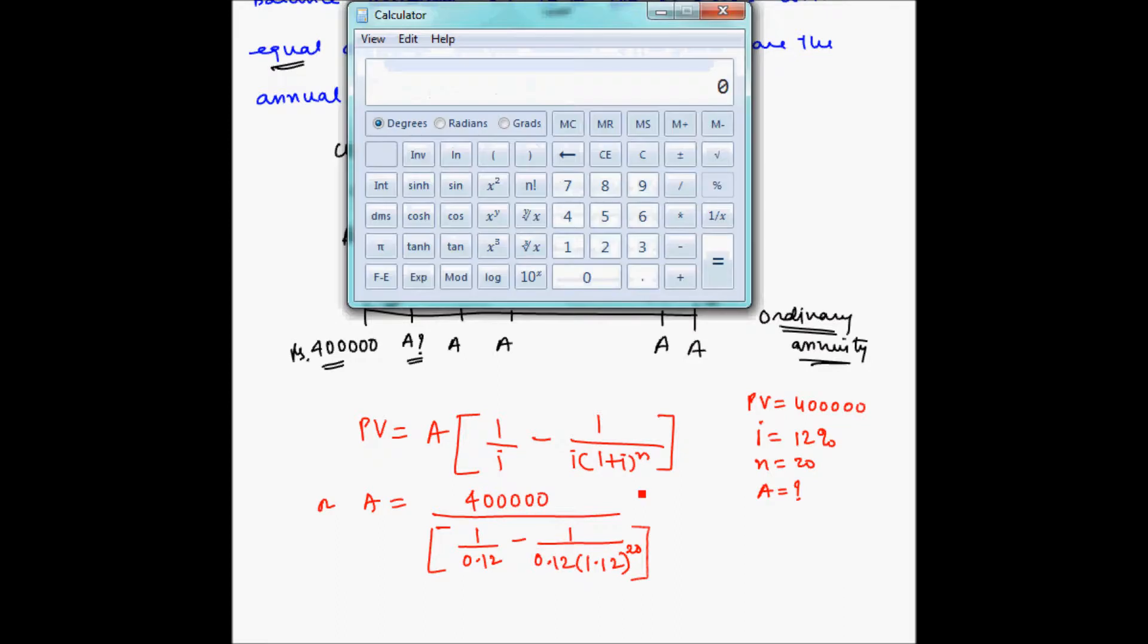Let us solve this using a scientific calculator. So let us first solve this portion here: 1.12 x to the power y 20 × 0.12 =, and then 1 by x, and this is negative, plus 0.12, 1 by x. So this is 7.469.